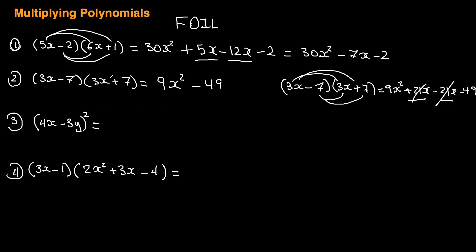Whenever we have the same binomial multiplied by the same binomial with the opposite sign in the middle, you can take the shortcut. But if both signs are the same — like plus and plus — there's another shortcut, and that leads us to question three: 4x minus 3y all squared, which means 4x minus 3y times 4x minus 3y. This is similar except both signs are the same.